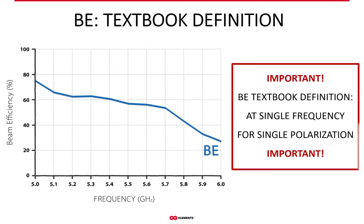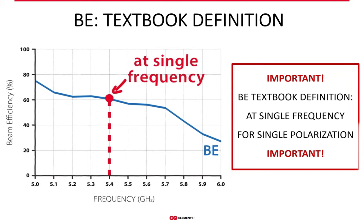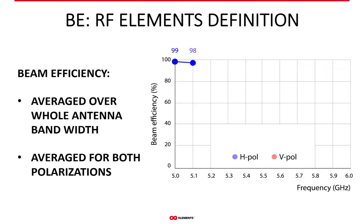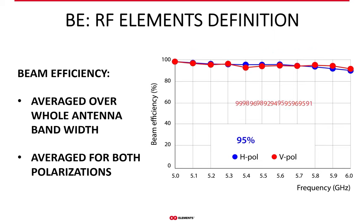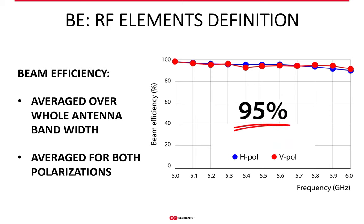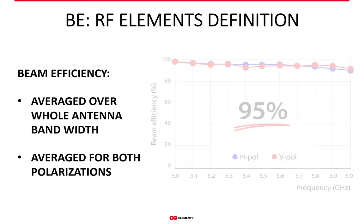It makes perfect sense to always consider any antenna parameter across the whole useful bandwidth an antenna works in, not just a single frequency point. Since WISPs use their antennas in a wide frequency band, it only makes sense that an antenna should perform well across the whole bandwidth in all important aspects, including beam efficiency. Which is why we decided to average beam efficiency over the whole useful bandwidth and on top of that for both polarizations. This averaging turns the textbook beam efficiency definition into a much more robust and reliable measure of side lobe performance than any single-frequency or single-polarization definition.